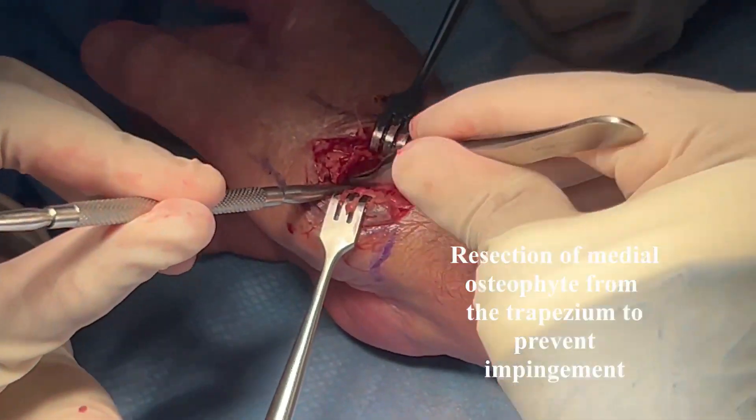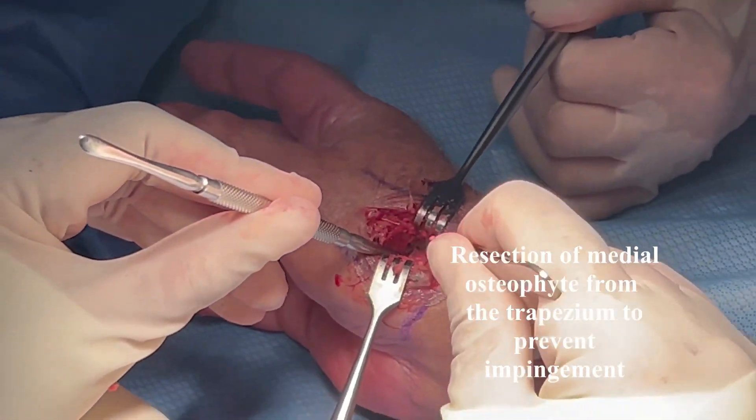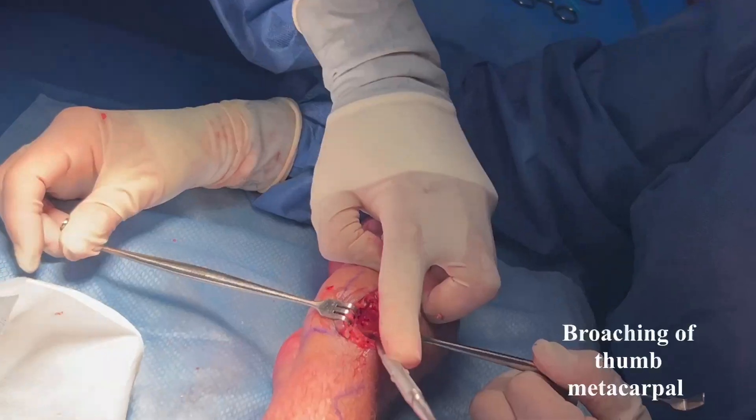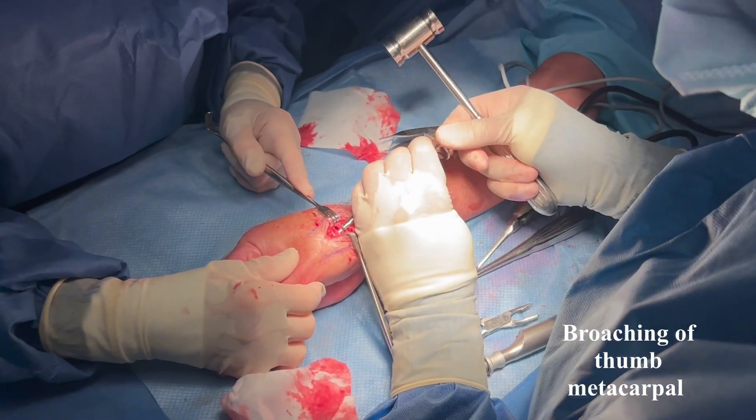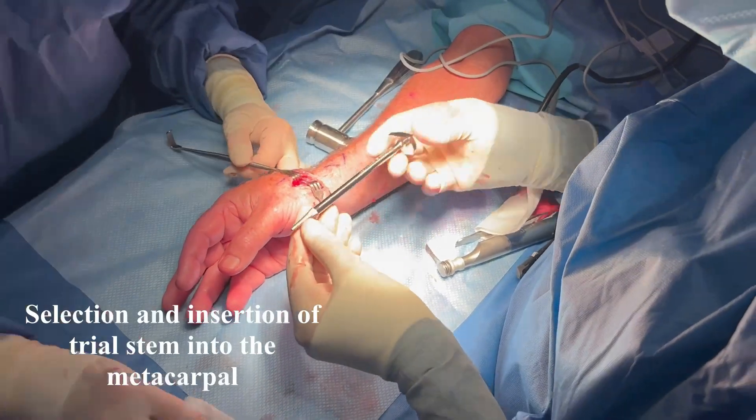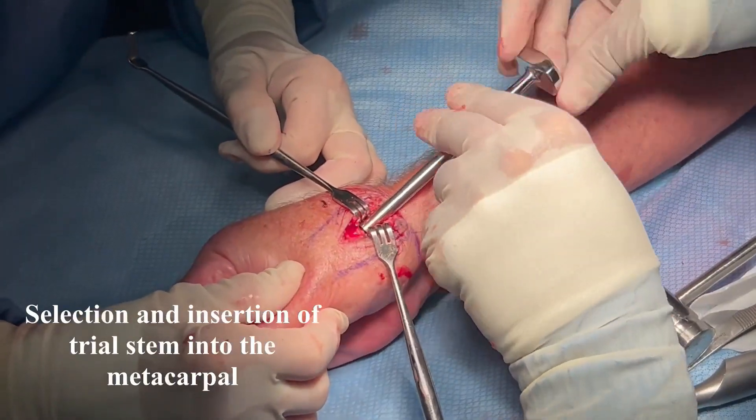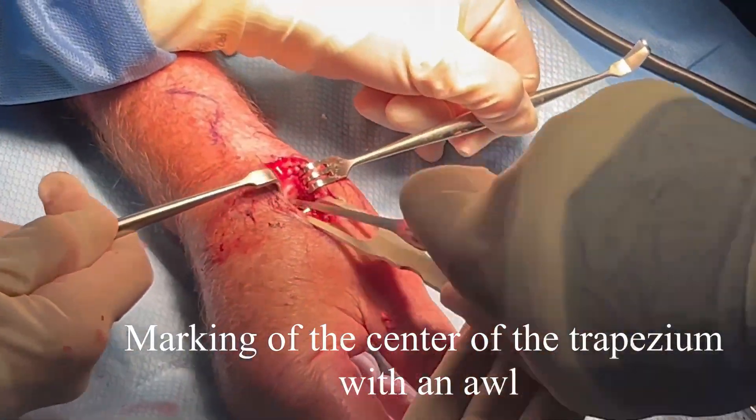The medial osteophyte needs to be removed with a rongeur or an osteotome. The metacarpal is prepared for implantation with different broaches.